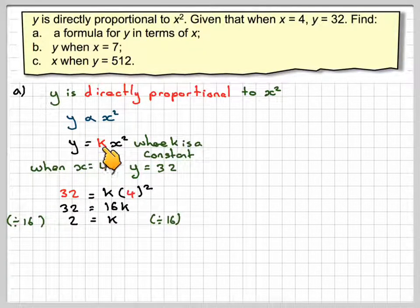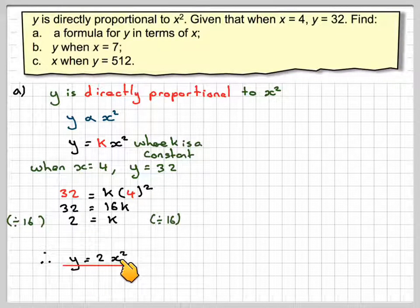Putting my value of 2 into my formula, we're going to have that Y is equal to 2X squared. So I've got my formula, and now I can use it to find parts B and C.